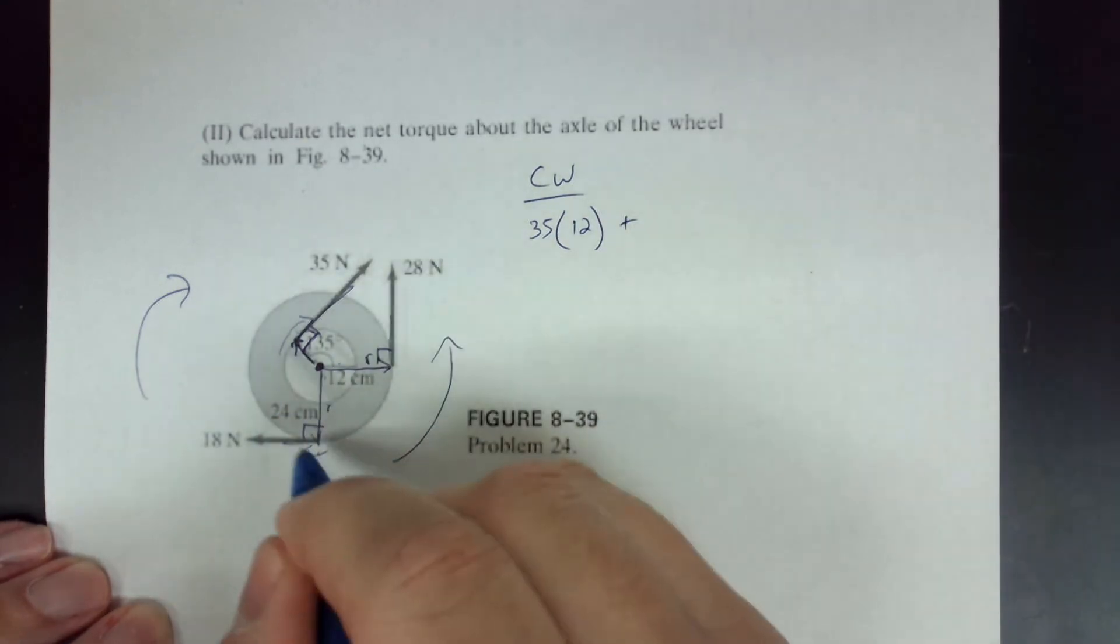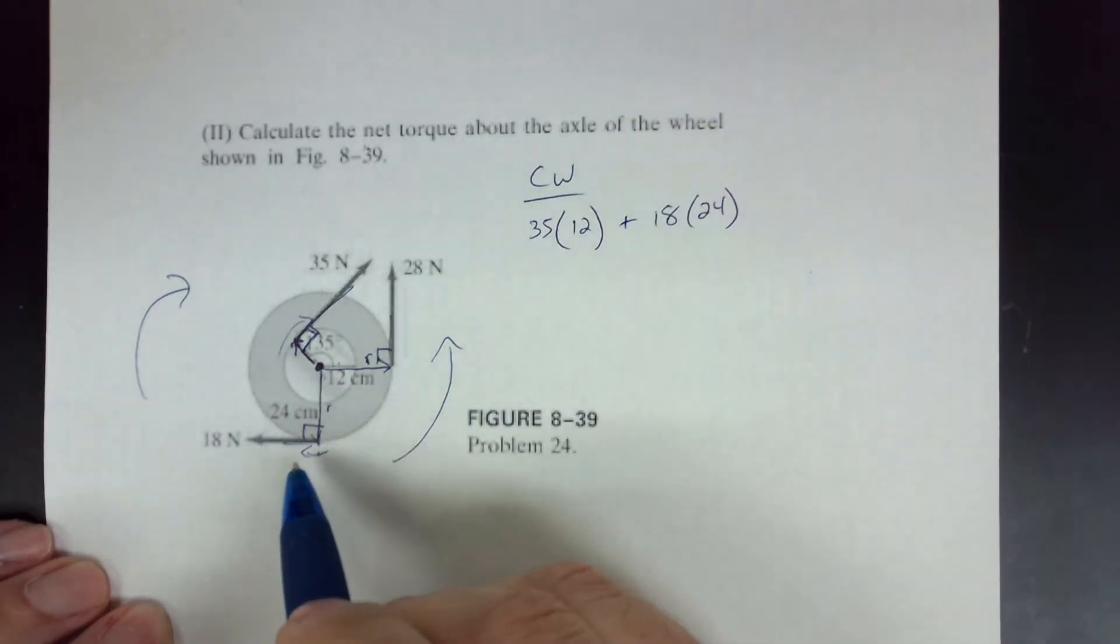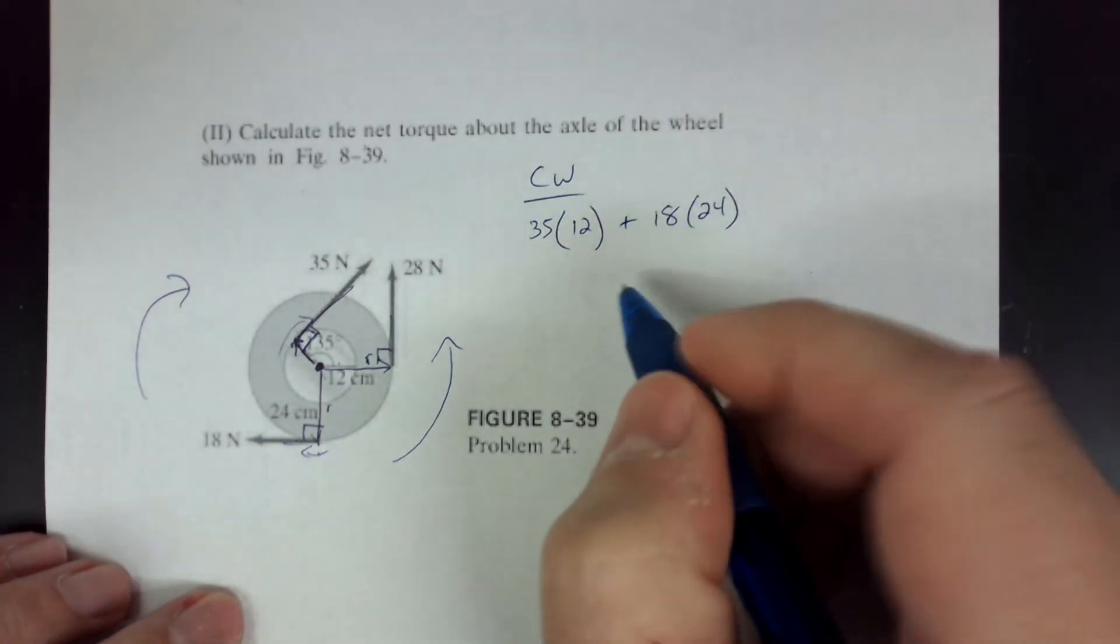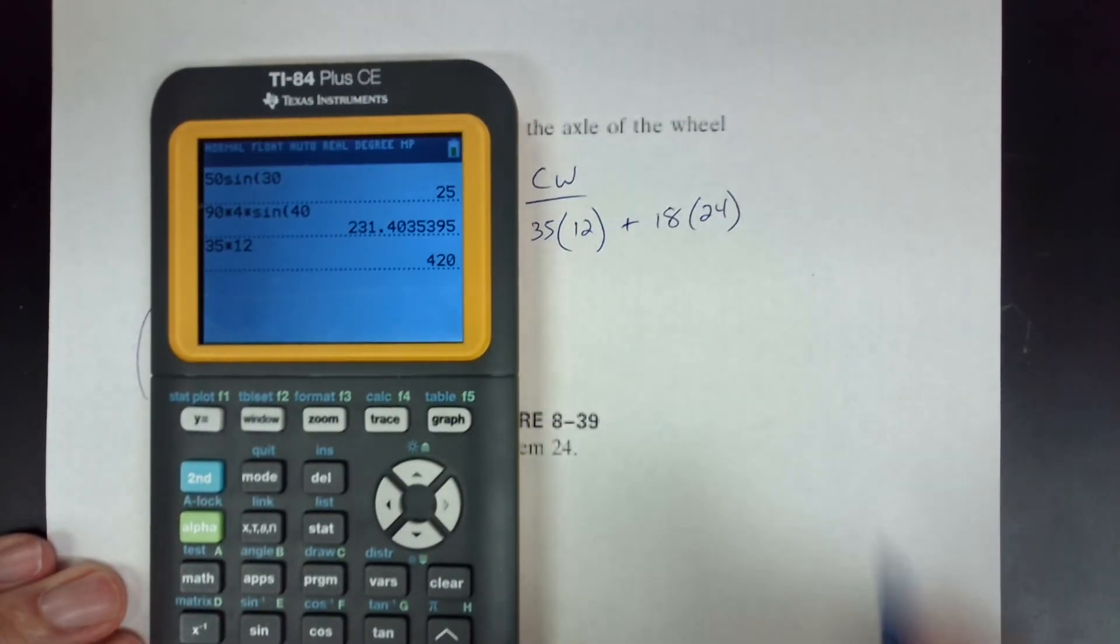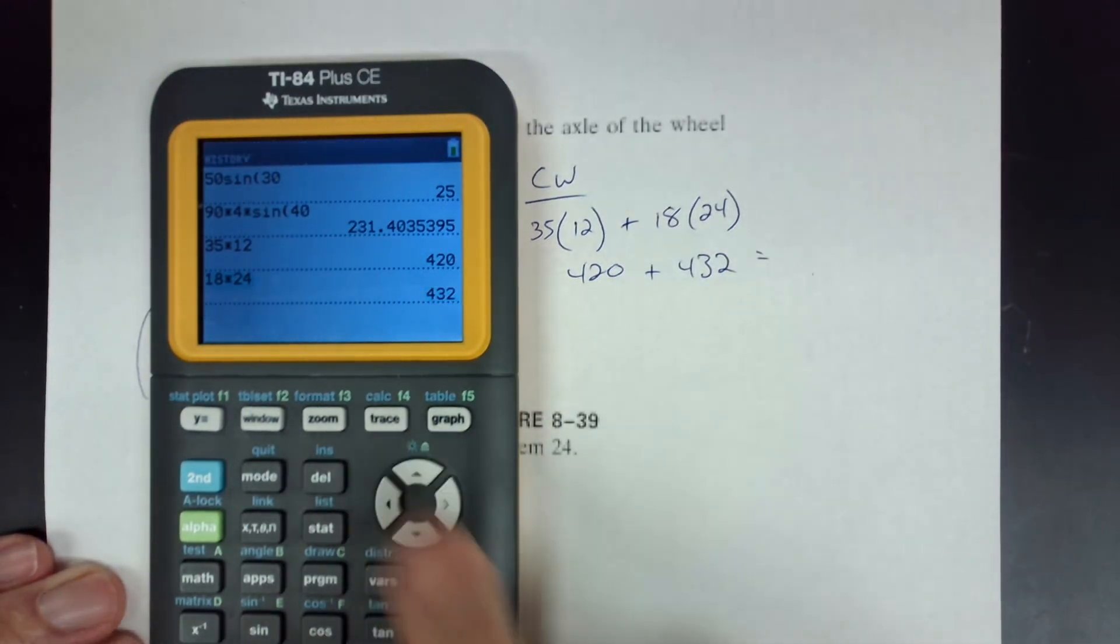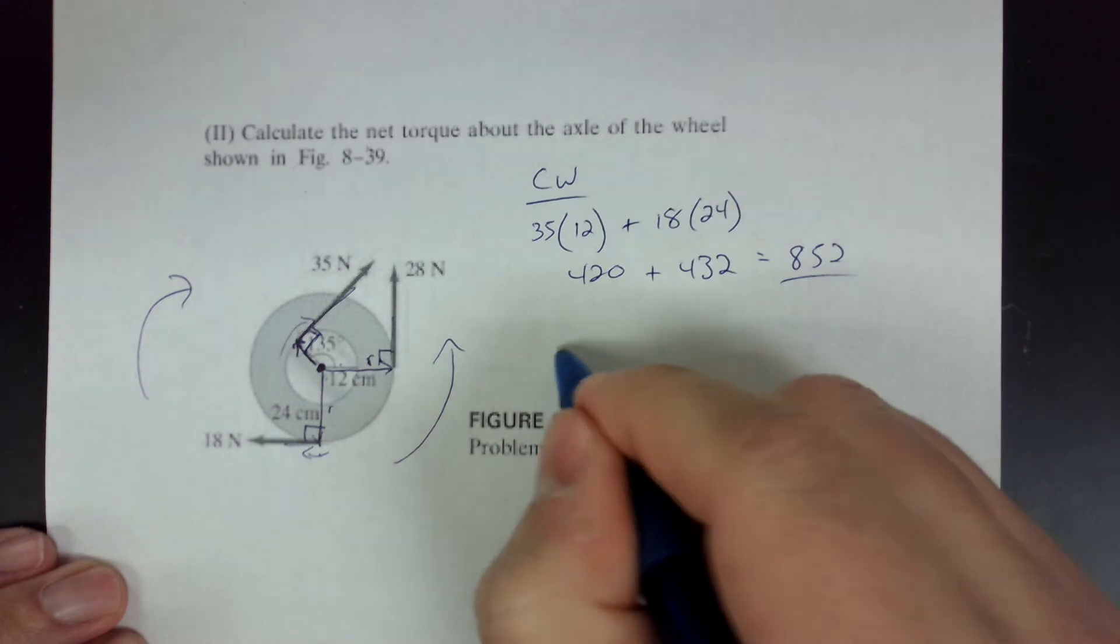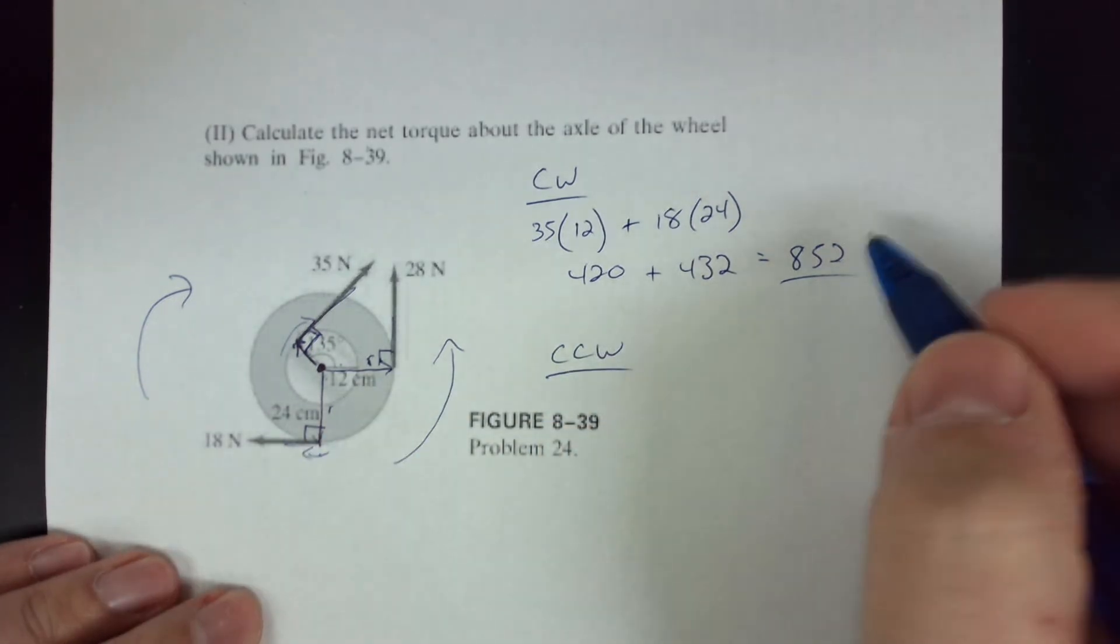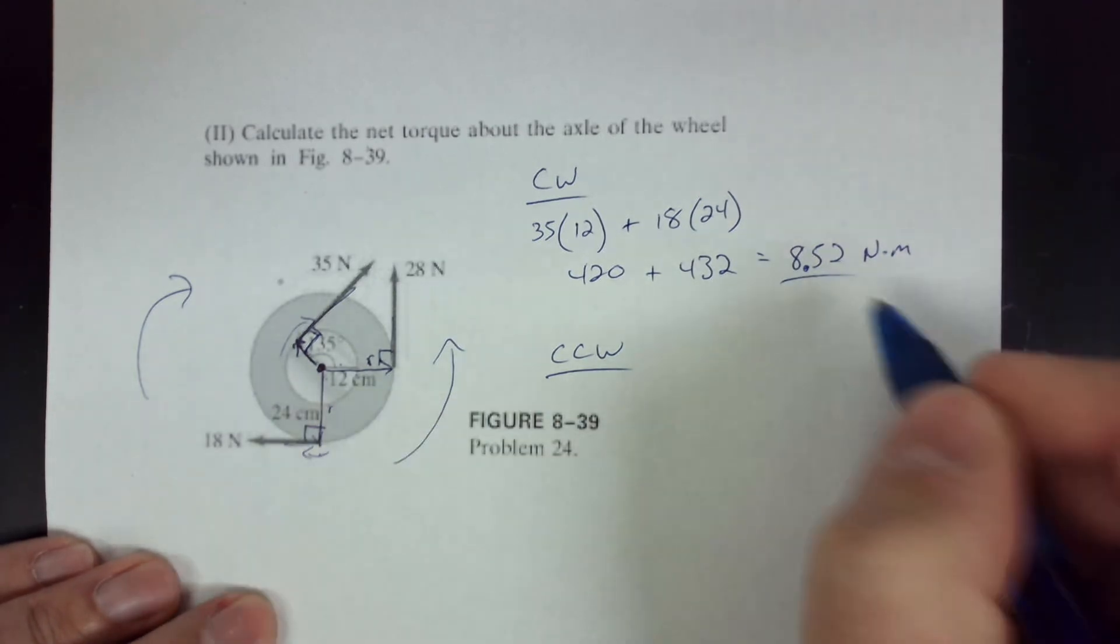So 35 times 12 centimeters plus 18 newtons times 24 centimeters. And that is going to be my clockwise torques. Let's do this. 35 times 12, 420 plus 18 times 24 gives me 432. So 420 plus, it's 852. And because these are centimeters, I should have two decimals back. So this is 8.52. Because this is in centimeters, I just moved the decimal back two. So 0.12, 0.24, 0.20, 0.32.